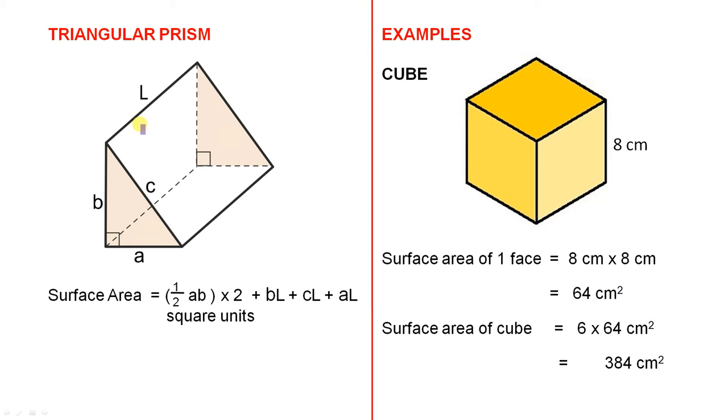So the surface area will be half AB times 2. That is, half the base times the perpendicular height, that gives you the area of that triangle, but we have to multiply it by 2, because we also have that one.